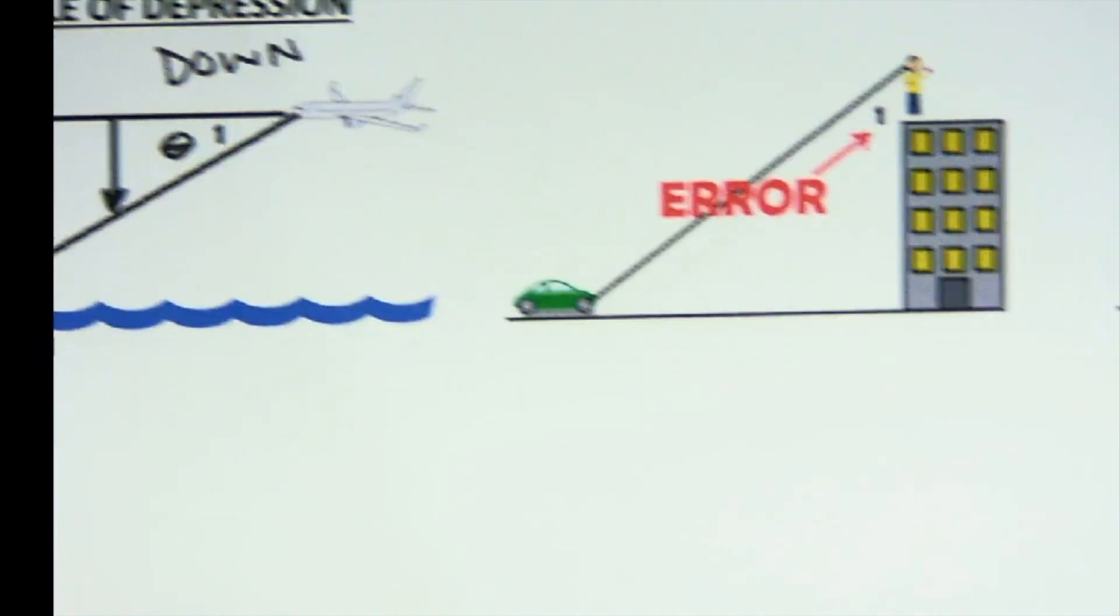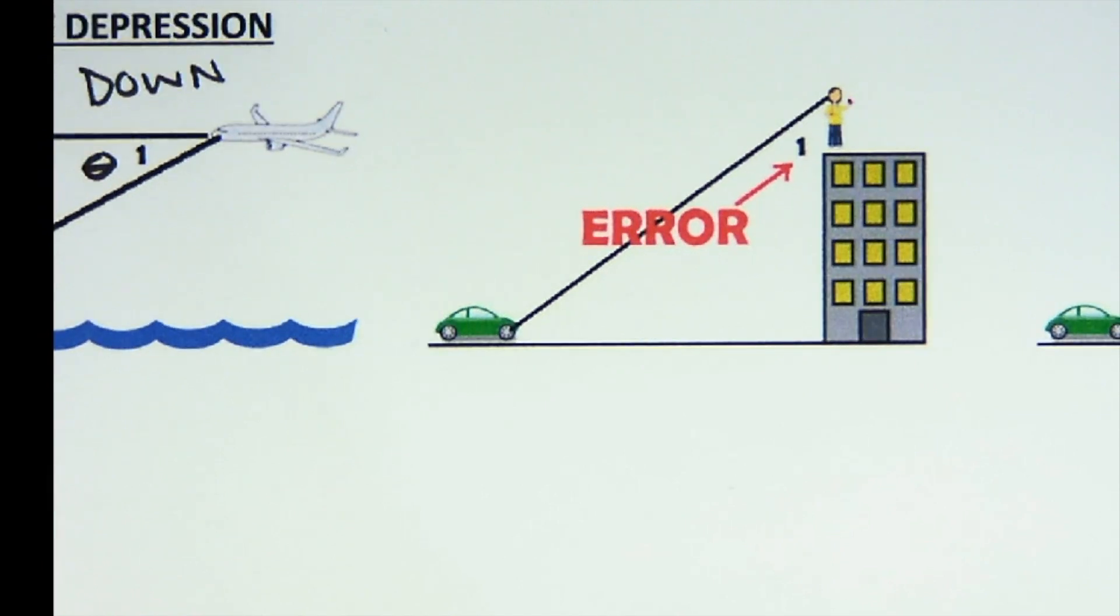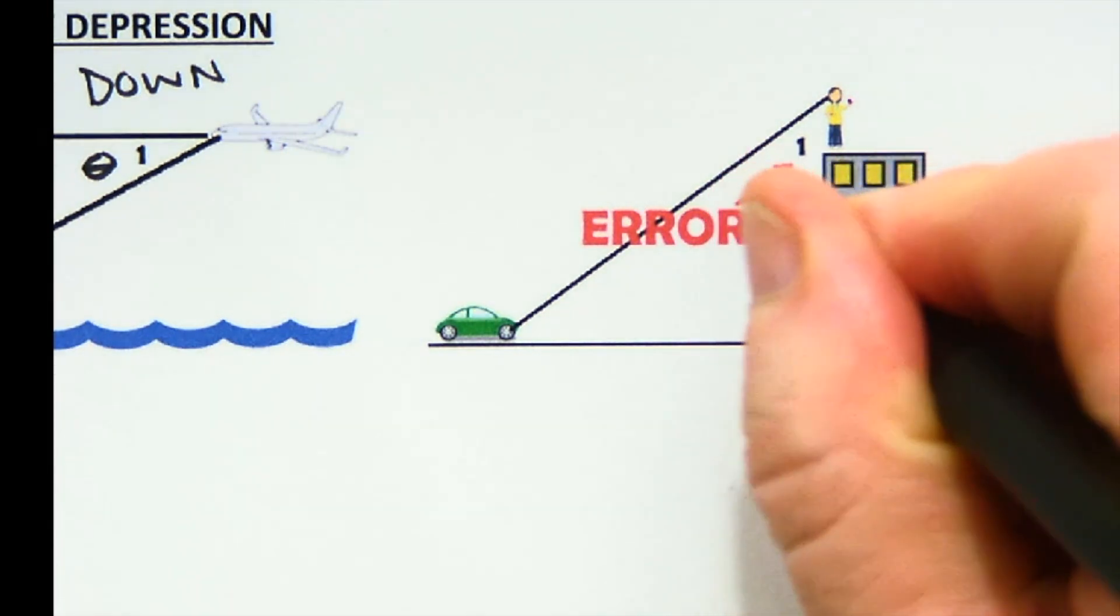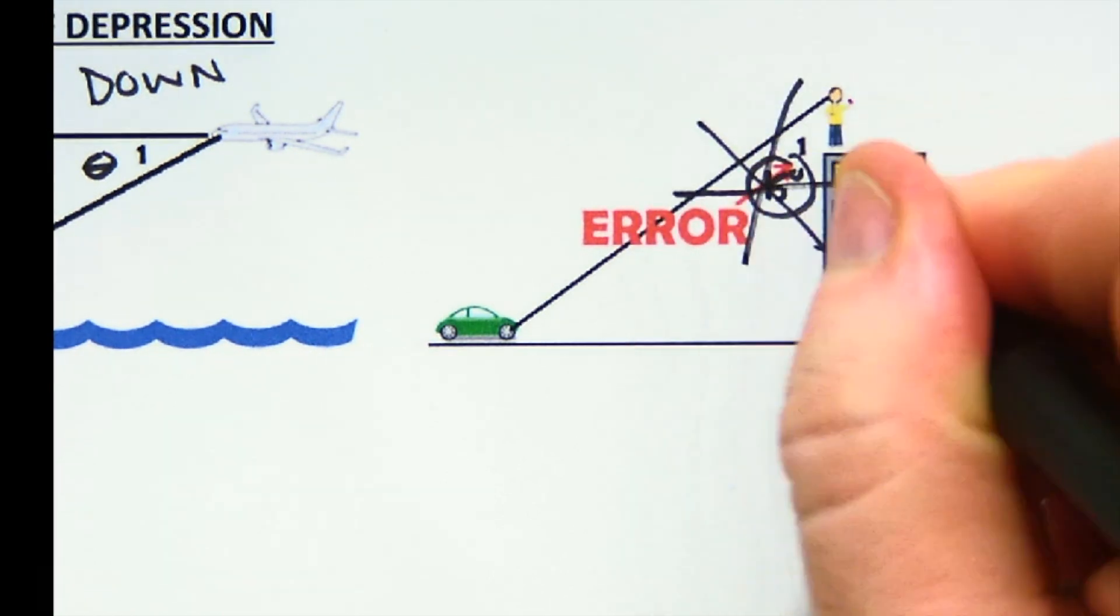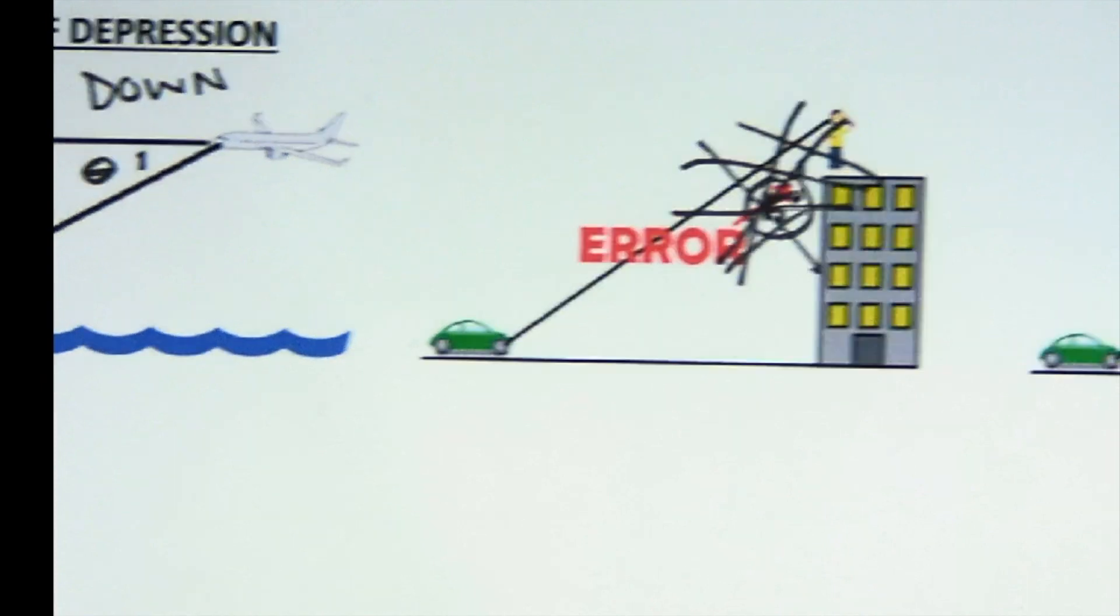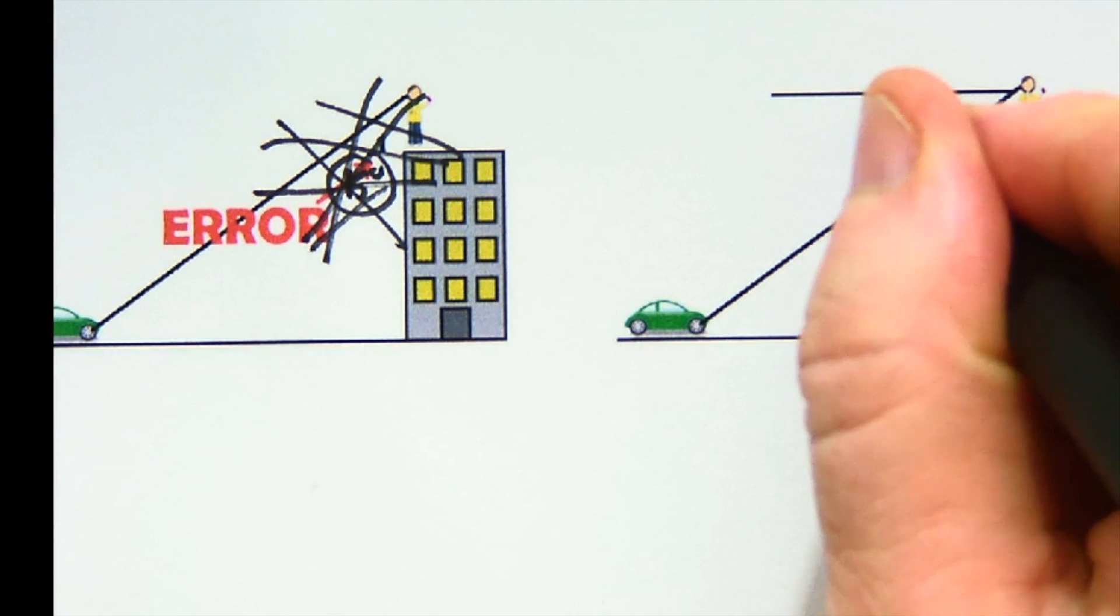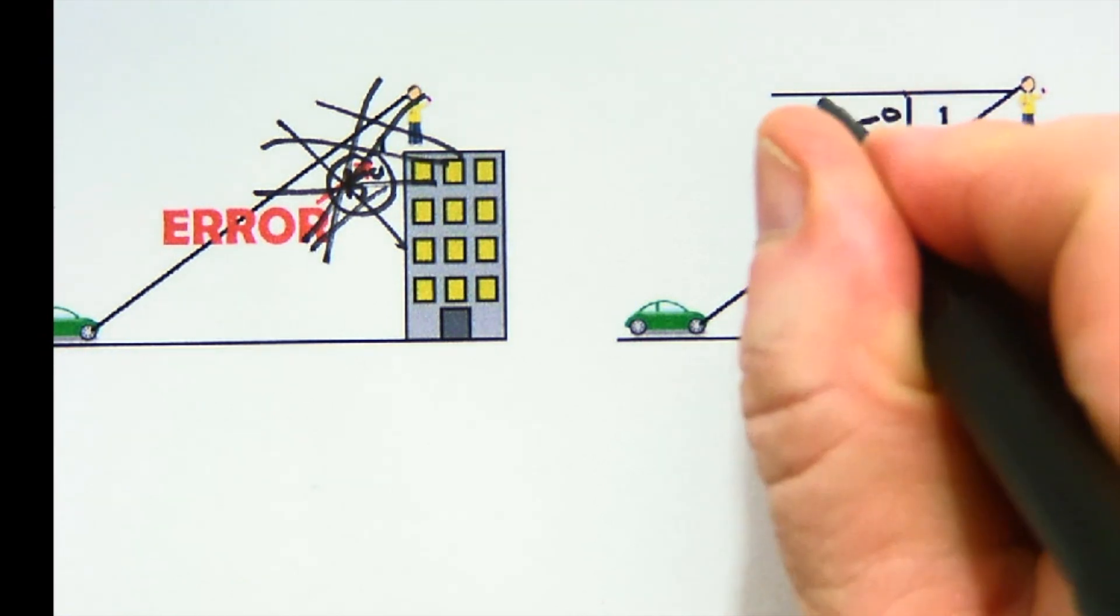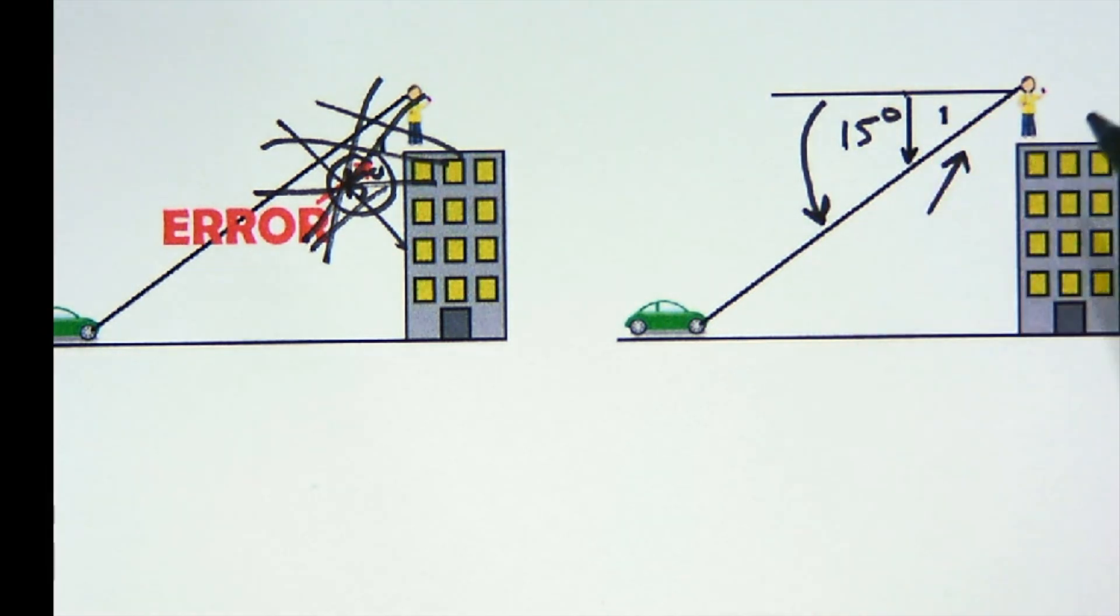Where students go wrong is in a question like this where it will say, Sarah is on the top of the building. I'm not sure what she's doing there, but looking down at an angle of depression of, say, 15 degrees to the car. A lot of students will place the 15 degrees in here because this is her looking down. This is wrong, wrong, wrong, wrong, wrong. Don't do that.